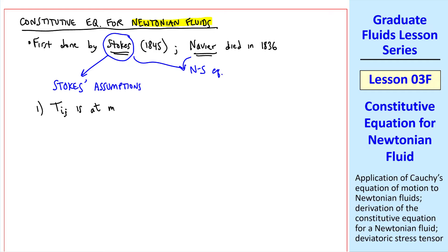First, Tij is at most a linear function of strain rate. Recall, Sij was defined previously as the strain rate tensor. This is analogous to Hooke's Law for a spring, an ideal spring, where linear strain produces linear stress.